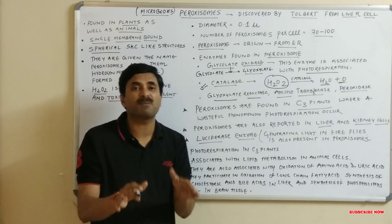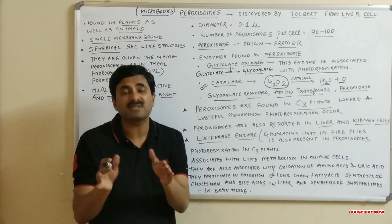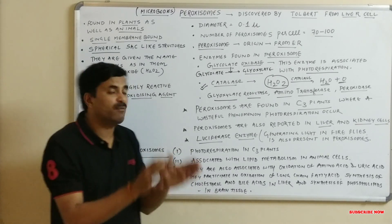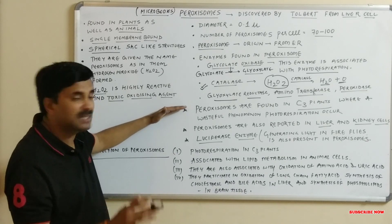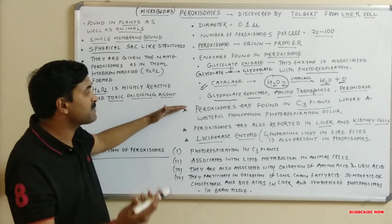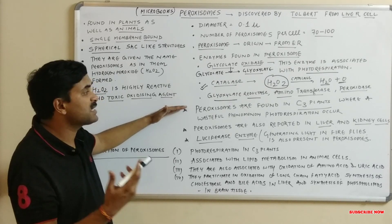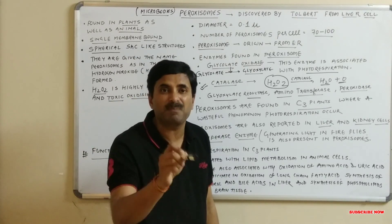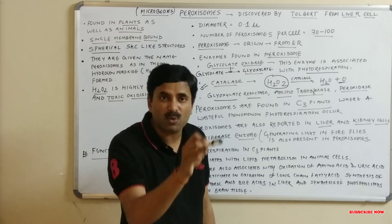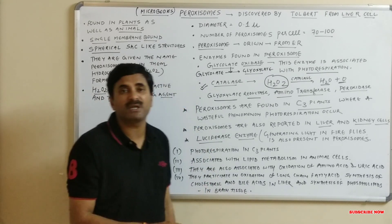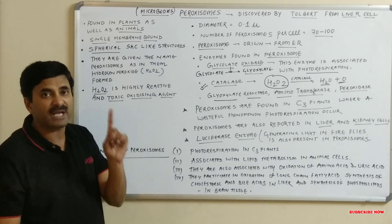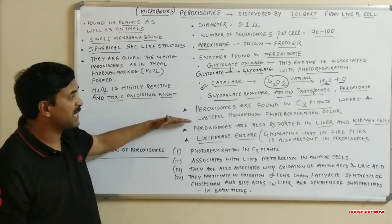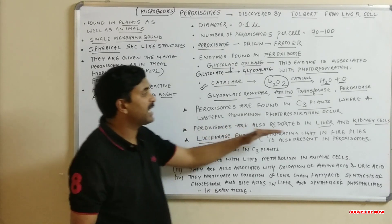Due to photorespiration, the photosynthetic yield is decreased by up to 25%, and that is why C3 plants are less efficient than C4 plants. In C4 plants, the wasteful phenomenon of photorespiration does not occur, so they are efficient plants. Photorespiration is completed in three cell organelles: the chloroplast, the peroxisome, and the mitochondria. So peroxisomes are clearly associated with photorespiration.